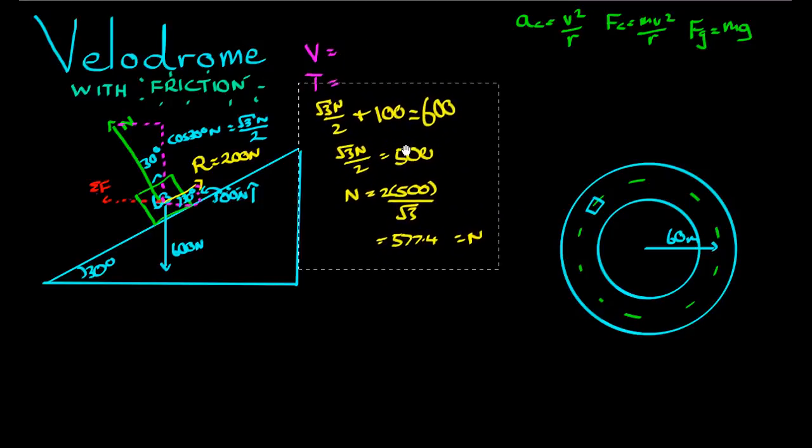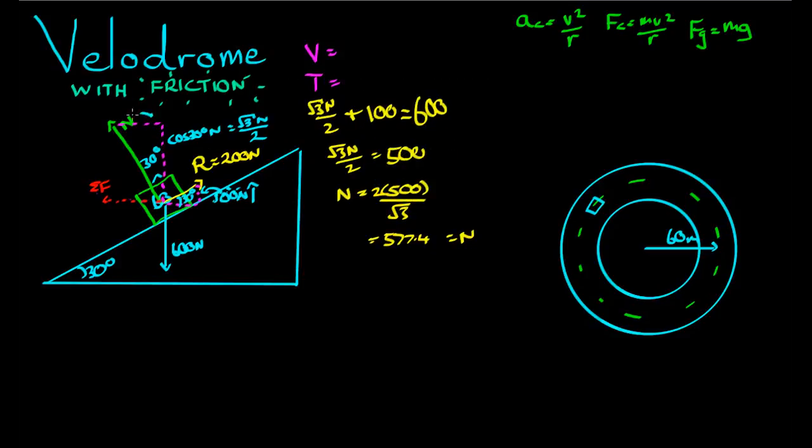And you're wondering, why do we need the normal force? It's because this component of the normal force here, and this component of the friction force should add together to give us that net centripetal force there. So let's figure out the length of that line there. That's equal to sine 30 degrees n. Now before, we didn't know what that was, because n was a mystery. Now n is not a mystery. Sine 30 degrees n is 1 half times 577.4, which comes to 288.7.